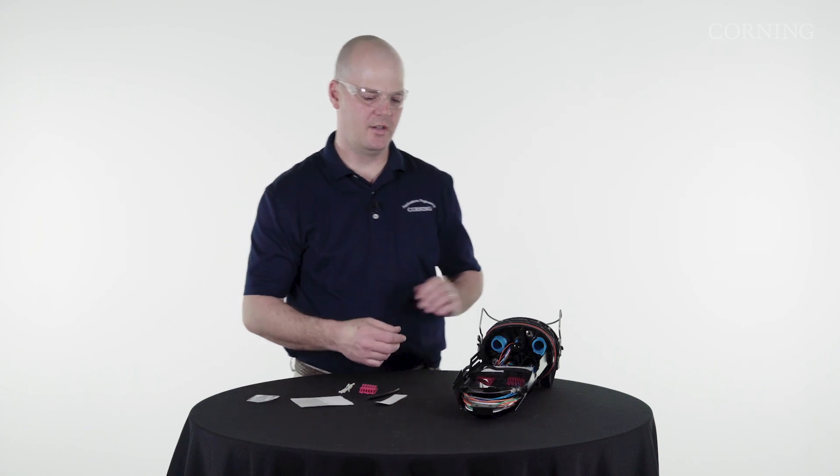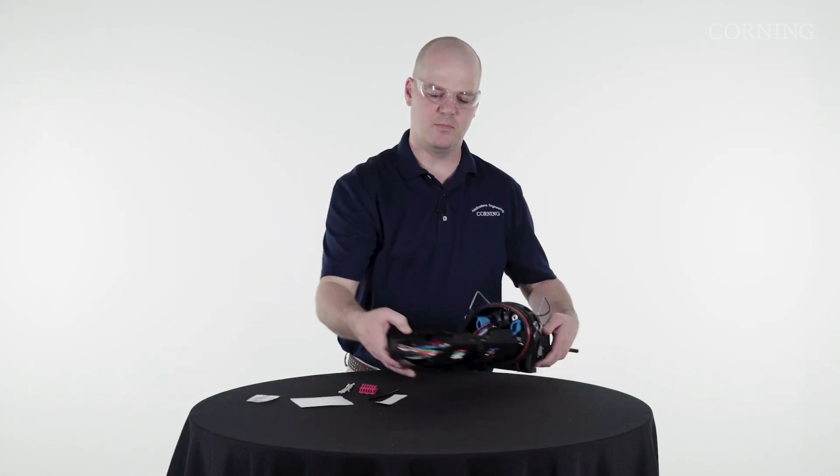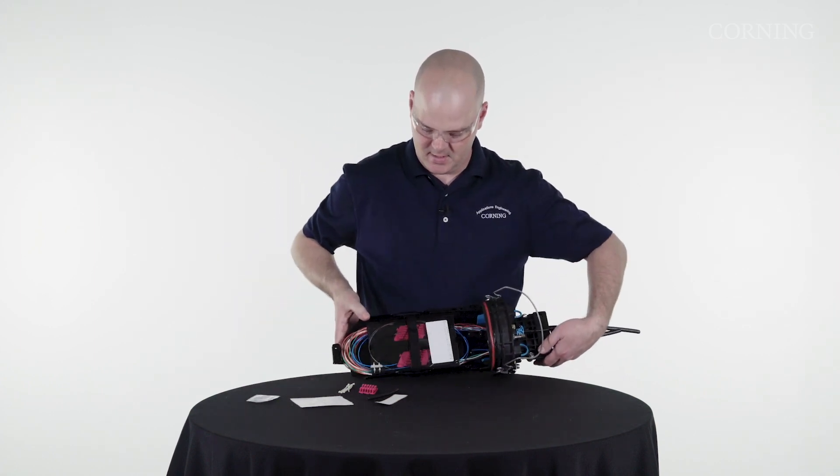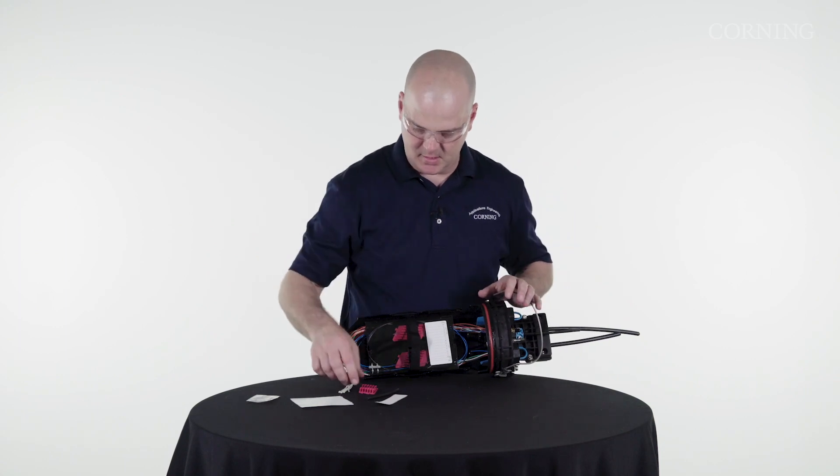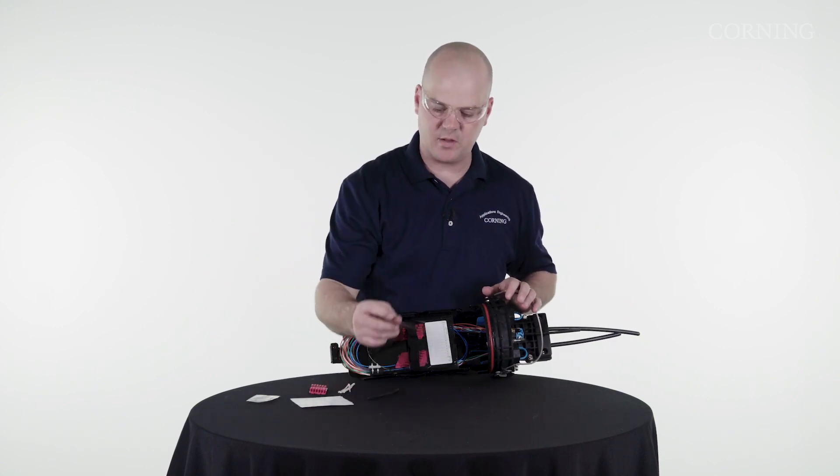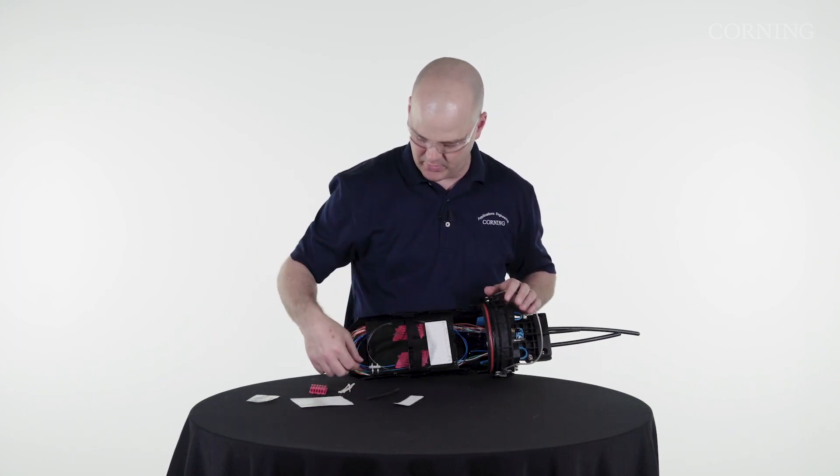That's the last portion here, is to route your buffer tubes, so the tray. I went ahead and did this. This tray comes with some felt tape. I put that around the larger buffer tubes, on the smaller buffer tubes like Mini Extend.